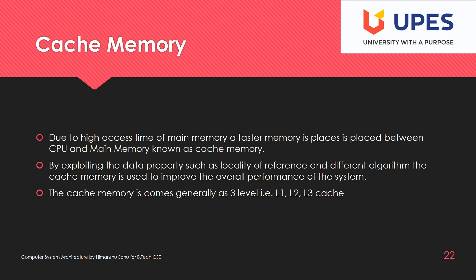Not only is it a faster memory, but for cache memory we are exploiting the data access property known as the locality of reference. Along with that, we use different algorithms to achieve overall system performance.